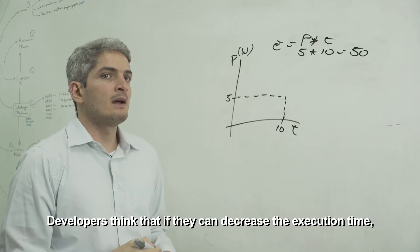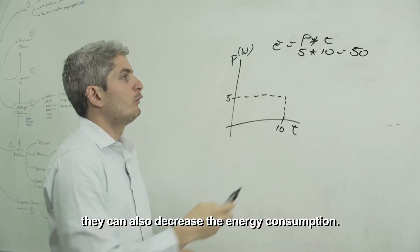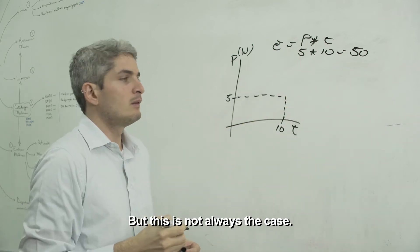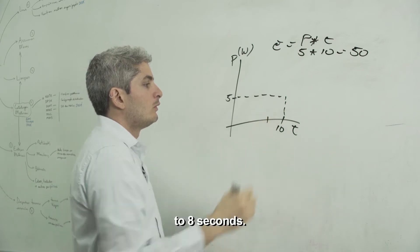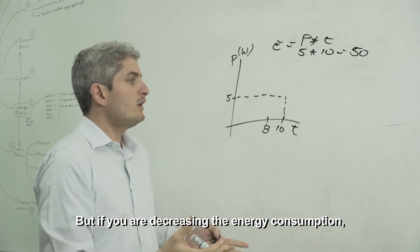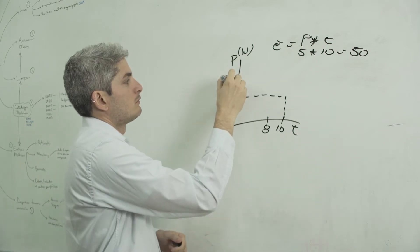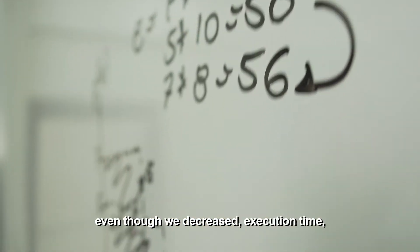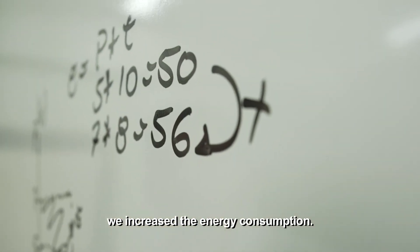Developers think that if they can decrease the execution time, they can also decrease the energy consumption. But this is not always the case. Let's say we can improve your application to 8 seconds. But if you are decreasing the execution time, you may be increasing power consumption — let's say you increase to 7 watts. If you go to the formula again, even though we decreased execution time, we increased the energy consumption.